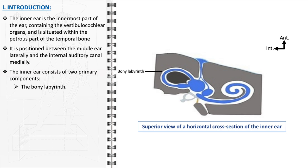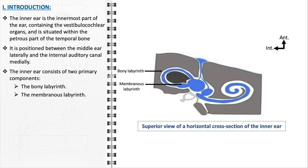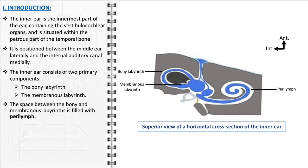The bony labyrinth acts as a rigid, protective framework — a complex system of channels and cavities carved into the temporal bone, which houses and safeguards the more delicate membranous labyrinth. Within the bony labyrinth resides the membranous labyrinth, a series of sacs and tubes filled with a fluid called endolymph, containing the sensory receptors for both hearing and balance. The space between the bony and membranous labyrinths is filled with perilymph, a fluid that plays a key role in the transmission of sound waves within the ear.